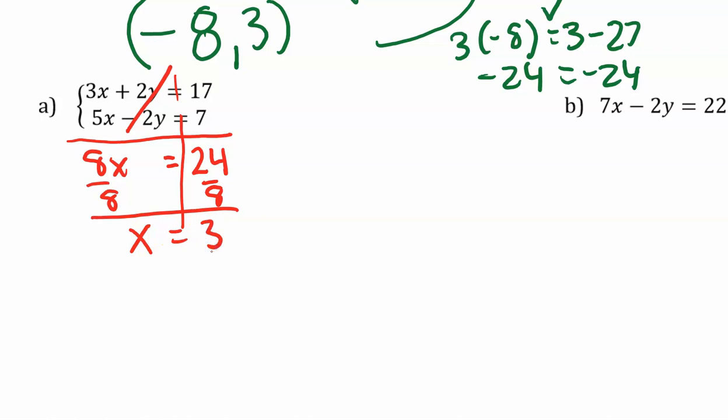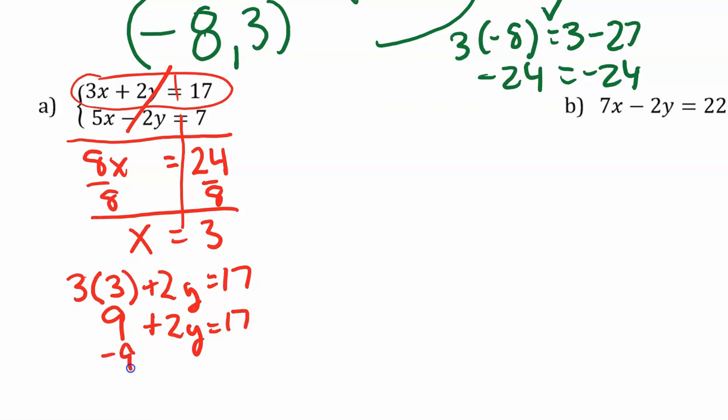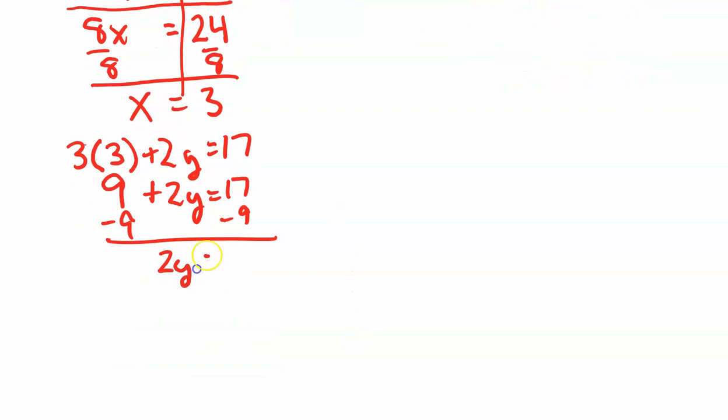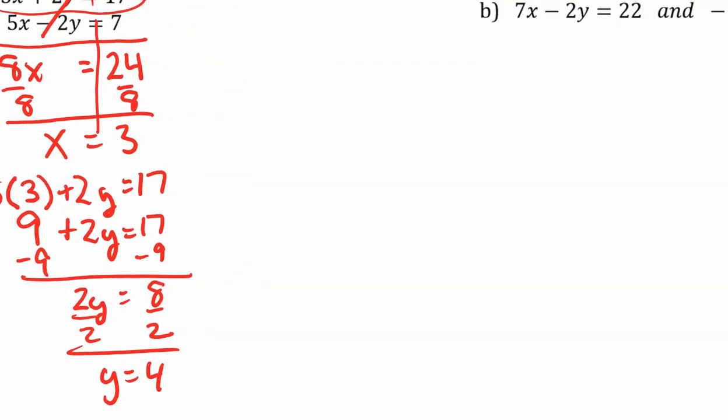Now I need to go back and solve for y. So 3 times x plus 2 times y equals 17. 9 plus 2y equals 17. Subtract 9 from each side. 2y equals 8. Divide both sides by 2. y equals 4. So my solution is 3 comma 4.